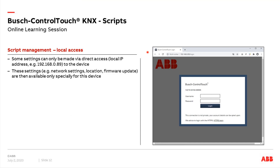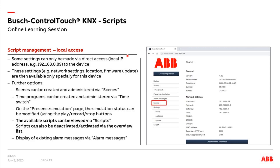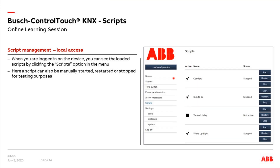To see the scripts locally, we access the Control Touch using the IP finder tool or by entering the IP address directly. We enter our username and password, and in the menu we find many different settings like scenes, time programs, and so on. One menu is also available for our scripts. When we click on this menu, we find all the scripts which have been created and loaded into the Control Touch. Here we can manually start, restart, or stop them, and also activate or deactivate them — very helpful when testing scripts.